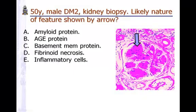This is nodular glomerulosclerosis — big nodules within the glomerulus. That's the glomerulus; each one is a glomerular capillary tuft. They are showing dark pink deposits. Nodular glomerulosclerosis. If the arrow would have been placed here, that would indicate hyaline arteriolosclerosis, or thickening of the blood vessel.